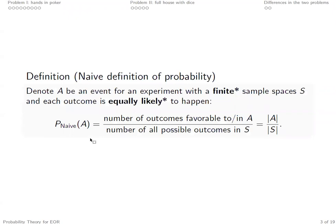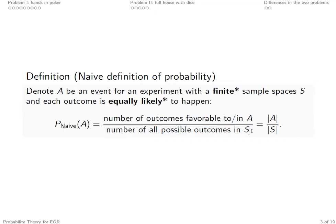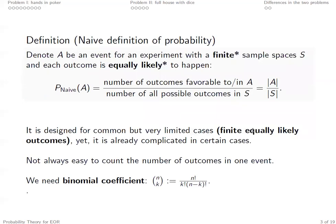Based on the naive definition of probability, we know the probability links the random event A to a number from 0 to 1 by this formula, which is the ratio of the number of outcomes in A divided by the number of all possible outcomes in the sample space S. So we need to know how to calculate the number of outcomes in both A and S in order to apply this naive definition of probability. It looks simple and it's designed for a common but very limited case — the naive probability only applies to cases where outcomes are finite and each outcome is equally likely to occur. However, it's already quite complicated in certain cases because it's not always easy to count the number of outcomes in one event.